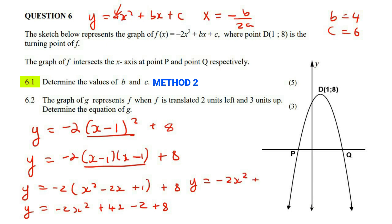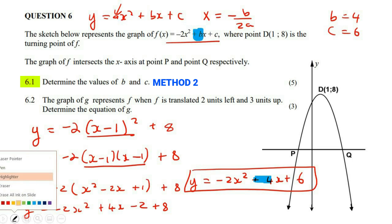And so then if you go solve, y is equal to negative two x squared, plus four x, plus six. So now we can look at this and say that b is four and c is six.